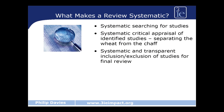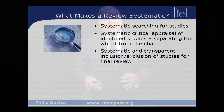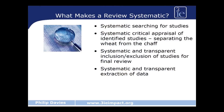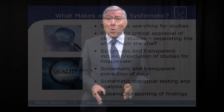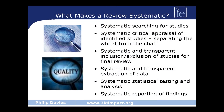We do this by being systematic and transparent in the way that we include and exclude studies, using open and transparent criteria. When we have all our studies, we are then able to extract the data that we need as systematically and transparently as possible. We also try to be as systematic as possible in testing and analysing the studies and the evidence that we extract, giving us an overall systematic reporting of the findings and an overall quality of evidence.